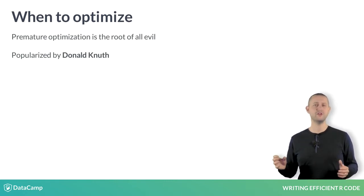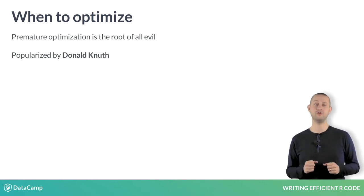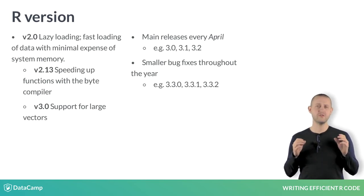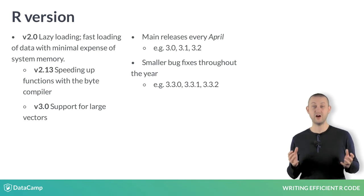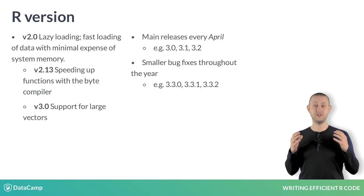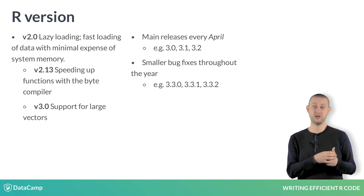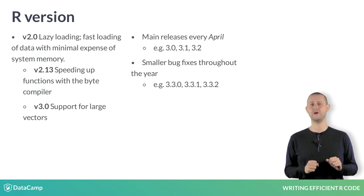Before you finish this introduction, there is one simple optimisation you should ensure you use: keep R up to date. New versions of R rarely break code. In fact, I have R code from the turn of the century that still works. New versions of R often provide speed boosts, such as improved handling of data frames, so your code just goes a little bit faster.